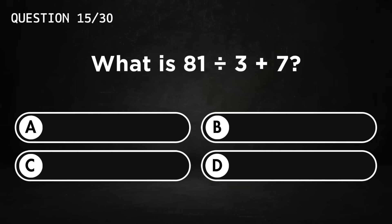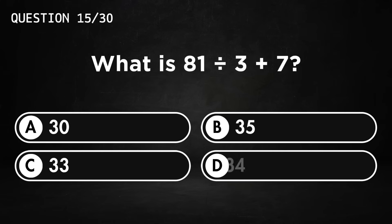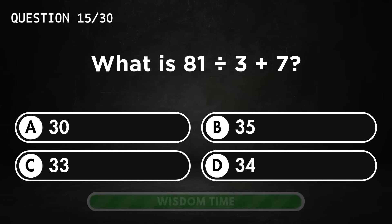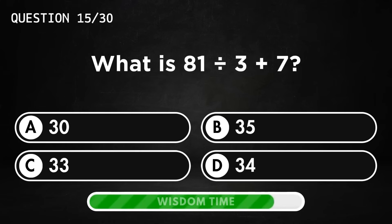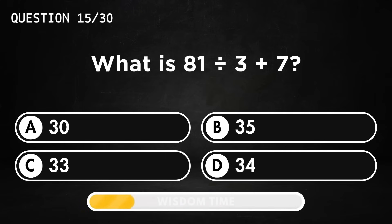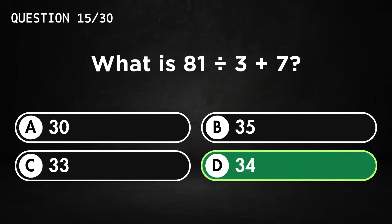What is 81 divided by 3 plus 7? Answer D, 34.